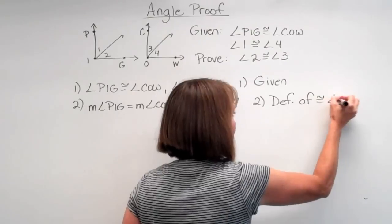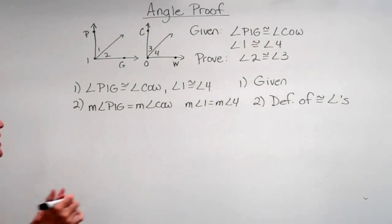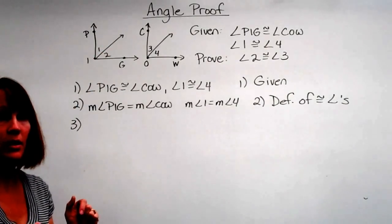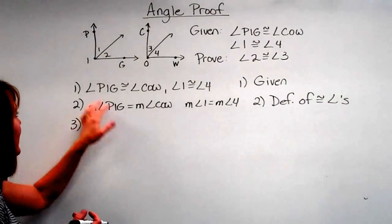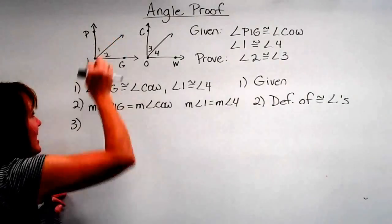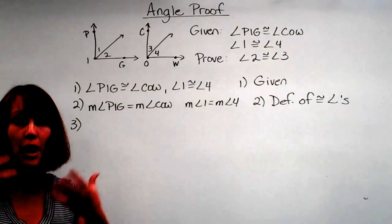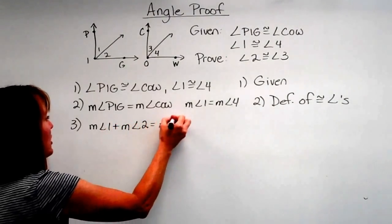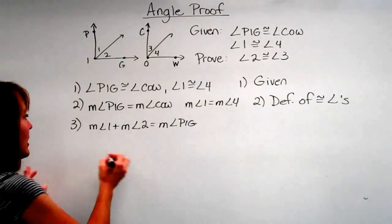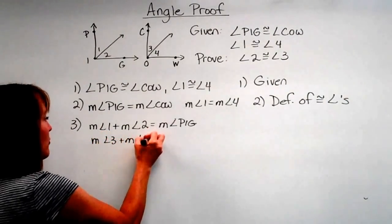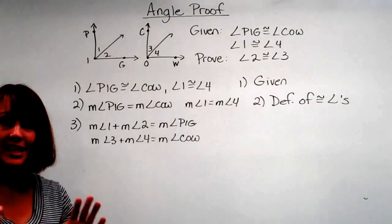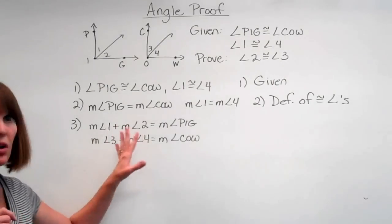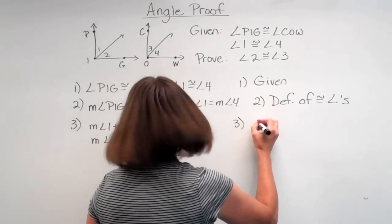Now, why do we want to do that? We need to define how the big angles relate to the little angles — we have to tie that together. By angle addition, we can add the two smaller angles to get the bigger angle. So we know that the measure of angle one plus the measure of angle two equals the measure of angle PIG, and similarly, the measure of angle three plus the measure of angle four equals the measure of angle COW. This is how we tie the numbers and letters together so we can talk about angles two and three, and this is by the angle addition postulate.